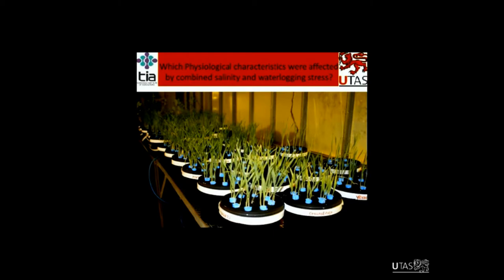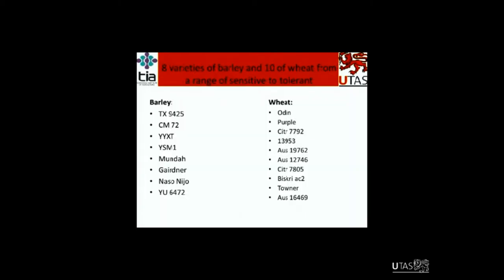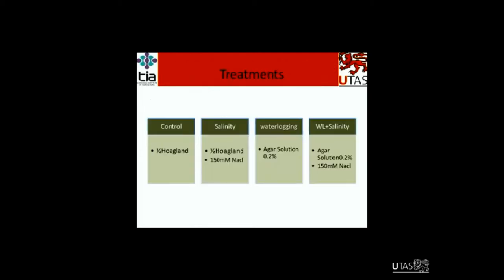The reason I started this research is because I wanted to know which physiological characteristics were affected by combined salinity and waterlogging stresses. We started with eight varieties of barley and ten varieties of wheat, ranging from sensitive to tolerant — you can see the varieties on the board. We worked on three kinds of treatments beside our control. For the control, we used 1.5 Hoagland solution. For salinity, we used 1.5 Hoagland plus 150 millimolar NaCl. For waterlogging, we used 0.2% agar solution. And for combined waterlogging-salinity, we used 0.2% agar solution plus 150 millimolar NaCl.